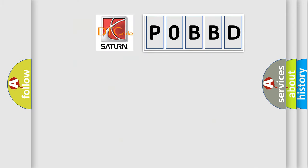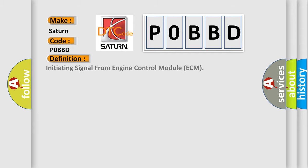So, what does the diagnostic trouble code P0BBD interpret specifically for Saturn car manufacturers? The basic definition is: Initiating signal from engine control module ECM.